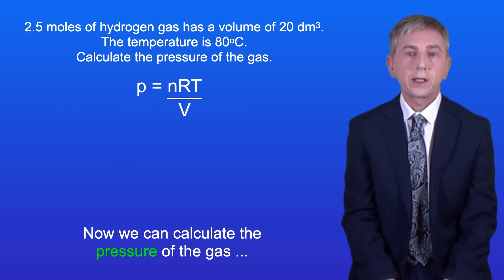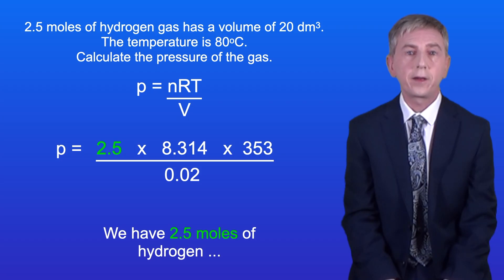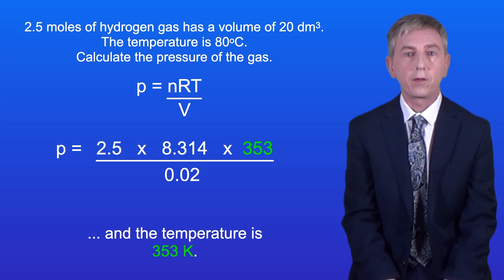Okay, now we can calculate the pressure of the gas and I've rearranged the ideal gas equation for pressure here. We've got 2.5 moles of hydrogen and the temperature is 353 kelvin.